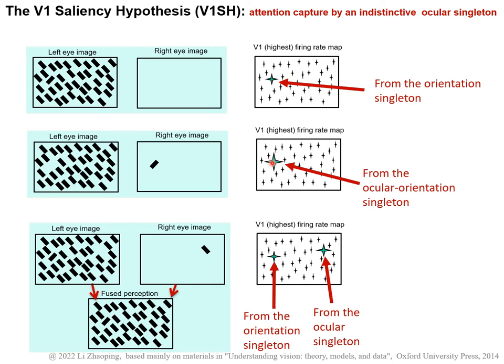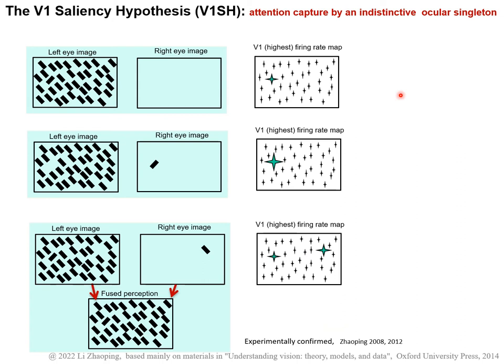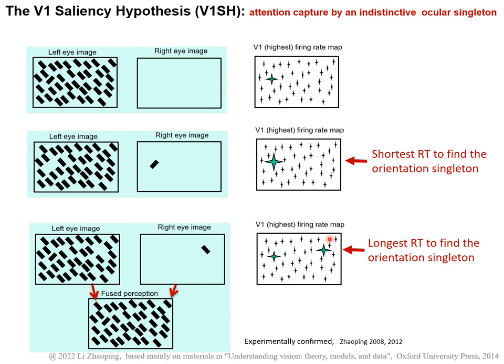However, the orientation singleton in the all-left-eye input is relatively more salient than the split-eye case simply because it doesn't have a competitor for attention — the other case has a competitor competing for attention with it. Relative to the baseline condition, the double-feature singleton condition has the shortest reaction time to find the orientation target, and the split-eye condition has the longest reaction time, simply because that location distracts attention or gaze from the search task. The reaction time difference between these two conditions gives another measure of saliency by the unique eye-of-origin feature.